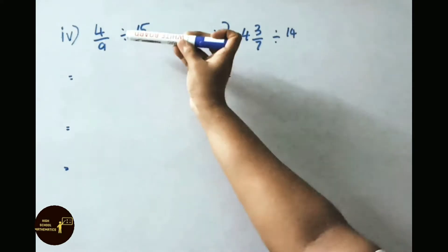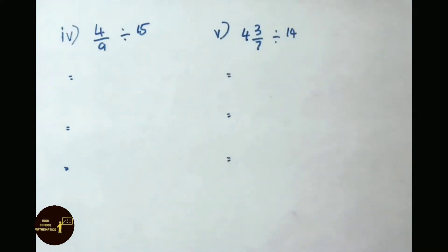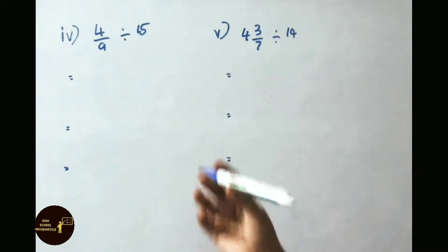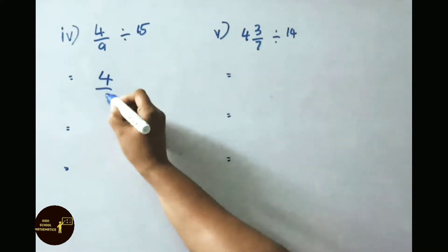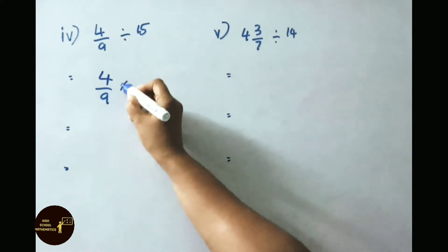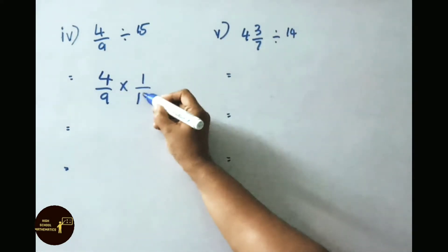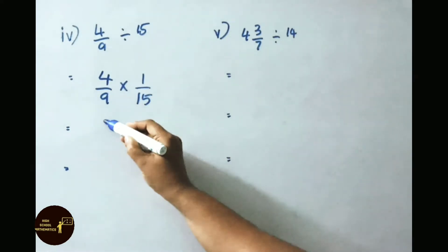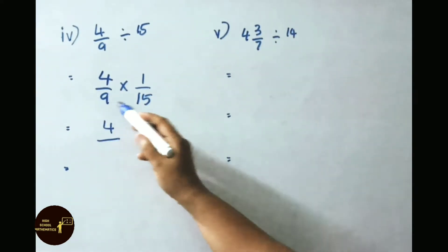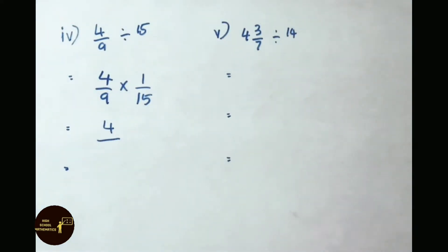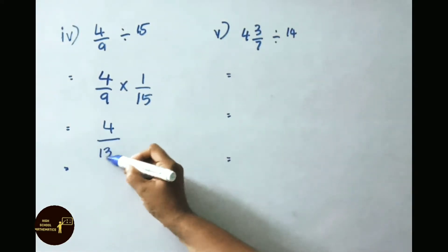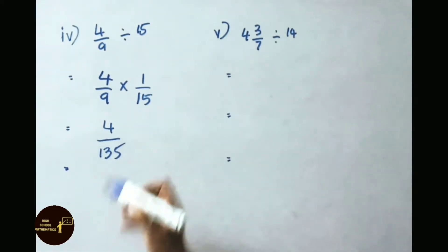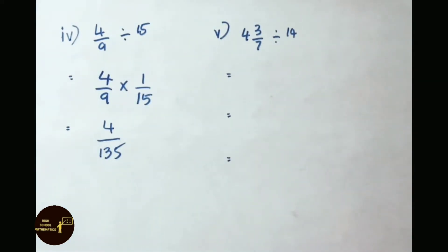See now the fourth sum: 4 by 9 divided by 15. Write down 4 by 9 into the reciprocal of 15, which is 1 by 15. Multiply the numerators: 4 into 1 is 4, denominator 9 into 15 is 135. So the answer is 4 by 135.